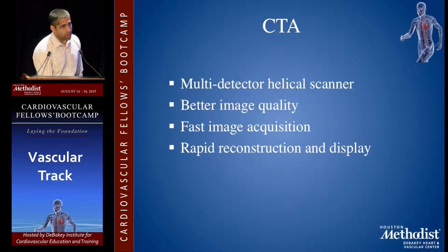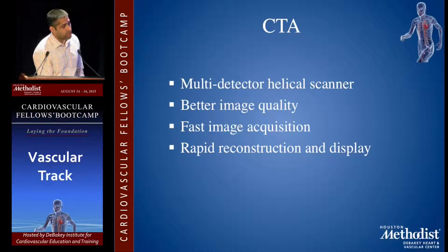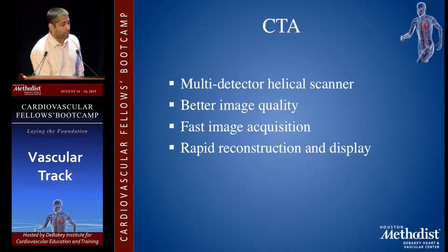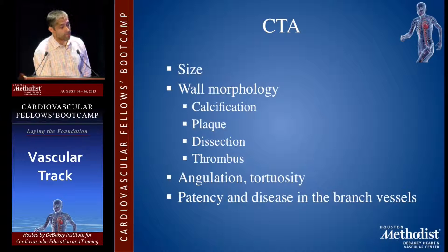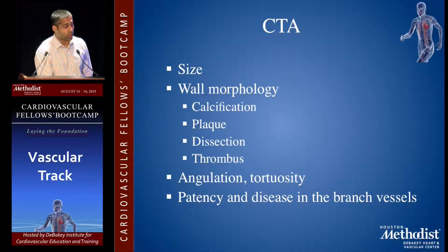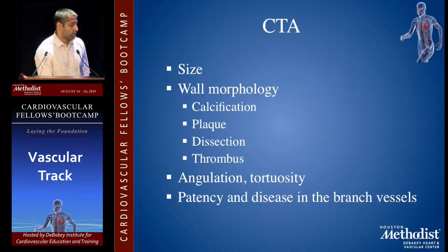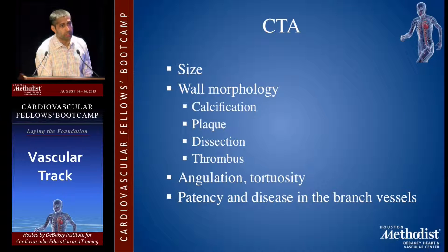CTA is probably the most commonly used modality, using a multidetector helical scanner. It offers better imaging quality, fast image acquisition, and rapid reconstruction displays. It provides great information regarding size, wall morphology, calcification, plaque, dissection, and intraluminal thrombus. It also helps identify angulation, tortuosity, and the patency and disease in branch vessels.